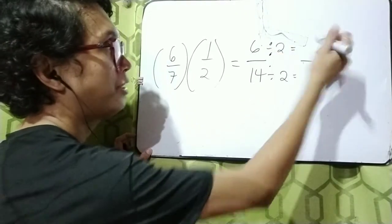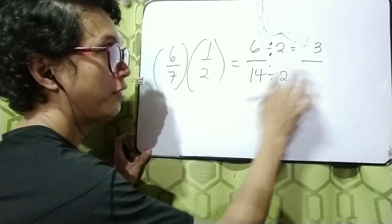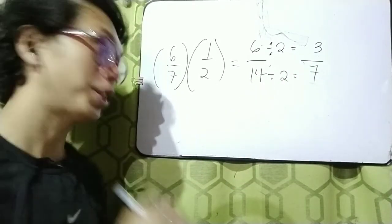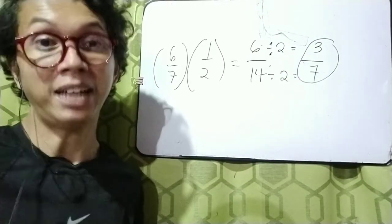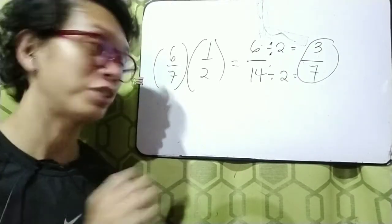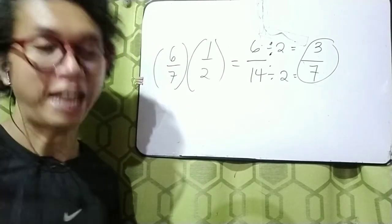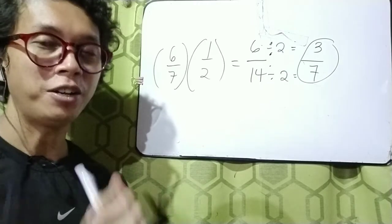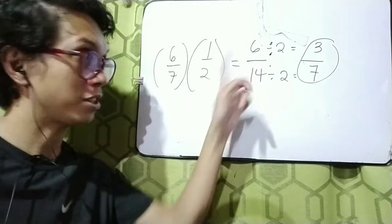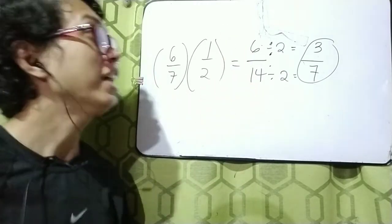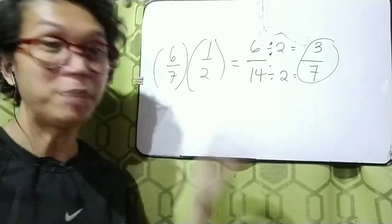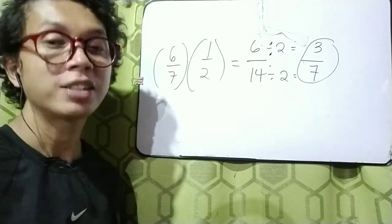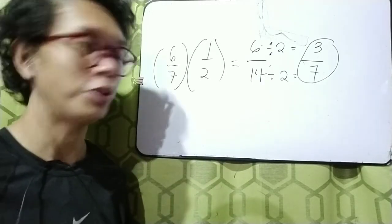As you can see, 6 and 14 are divisible by 2, so let's simplify. 6 divided by 2 is 3, and 14 divided by 2 is 7. So our final answer is 3 over 7. It is really best to simplify your final answer to the lowest term. Just look for a number that divides both the numerator and denominator until the result cannot be simplified any further — that's the lowest term.